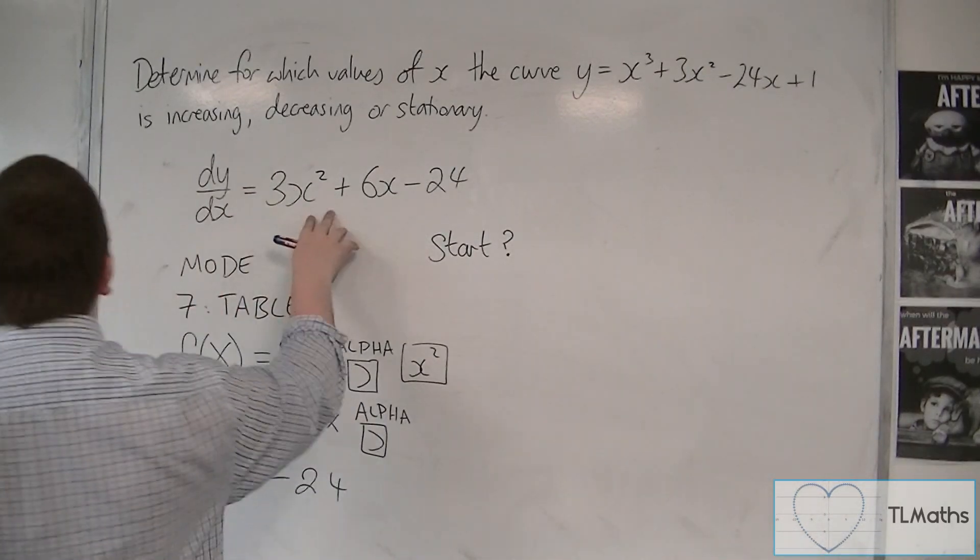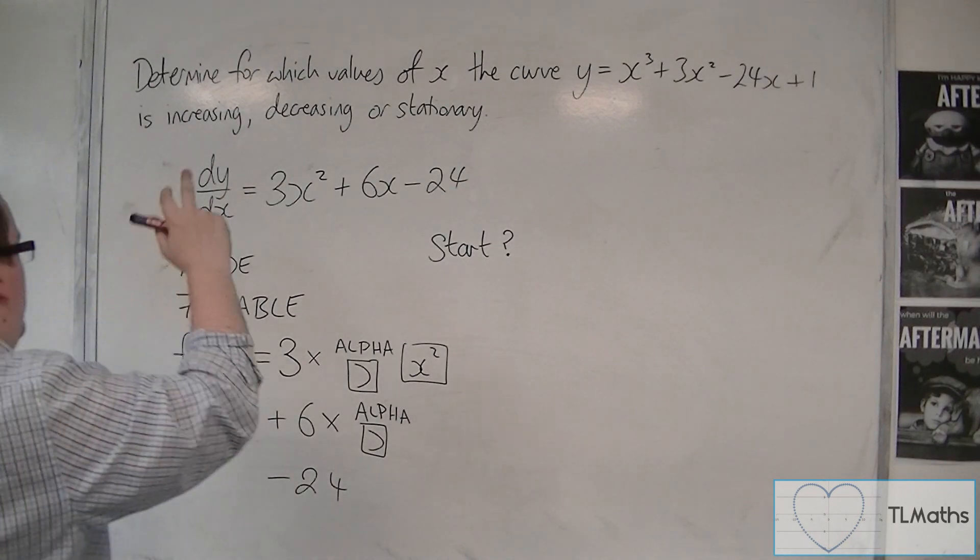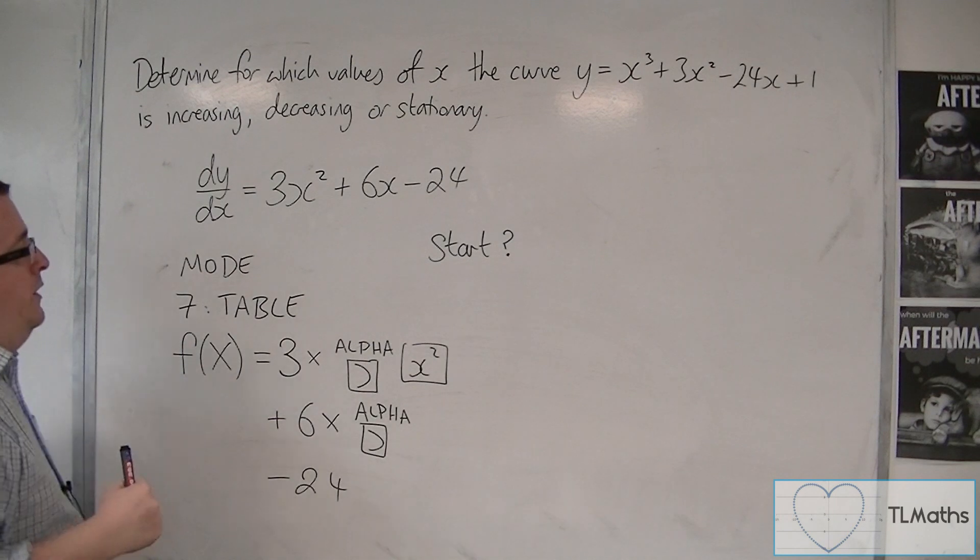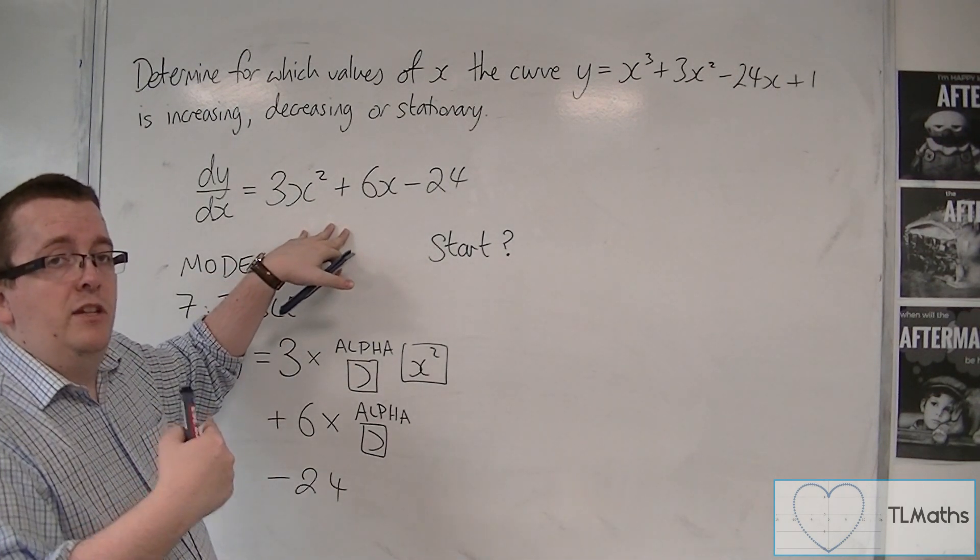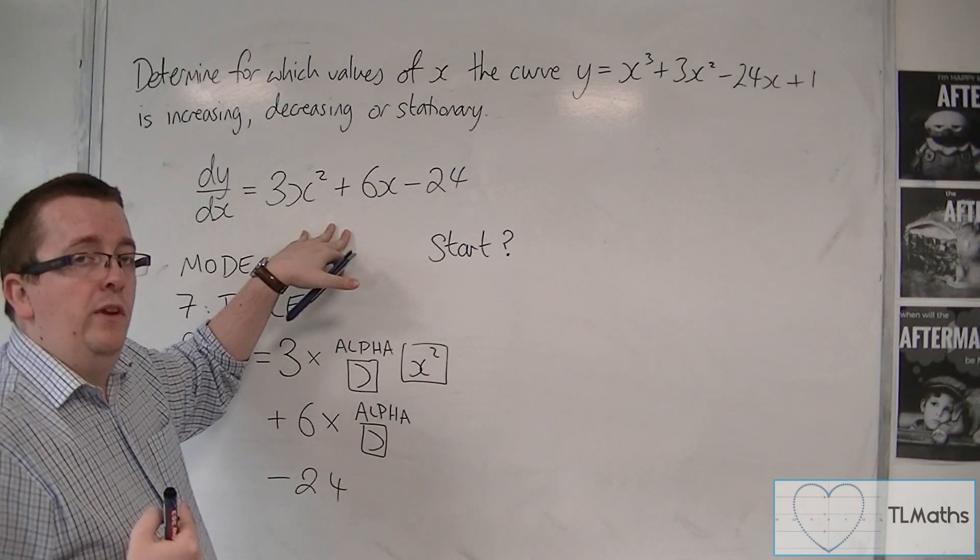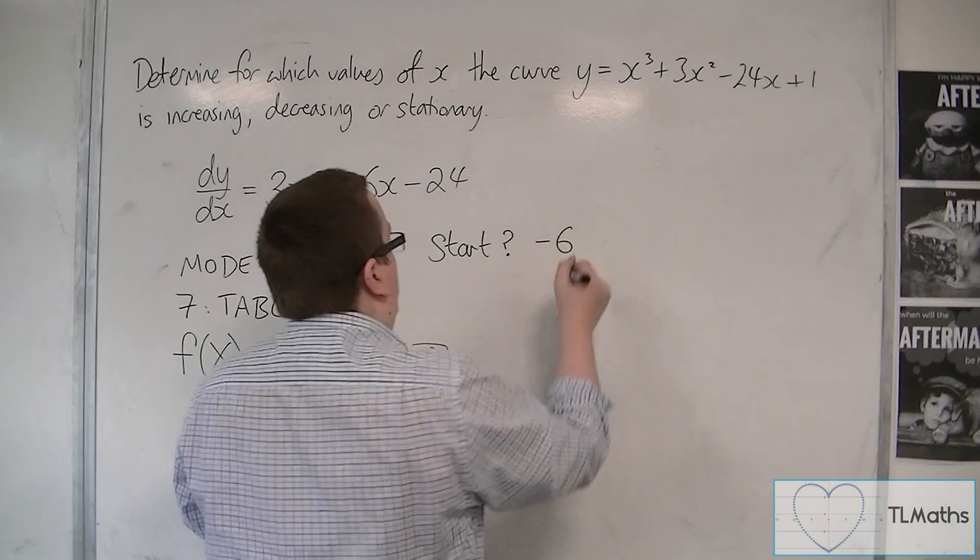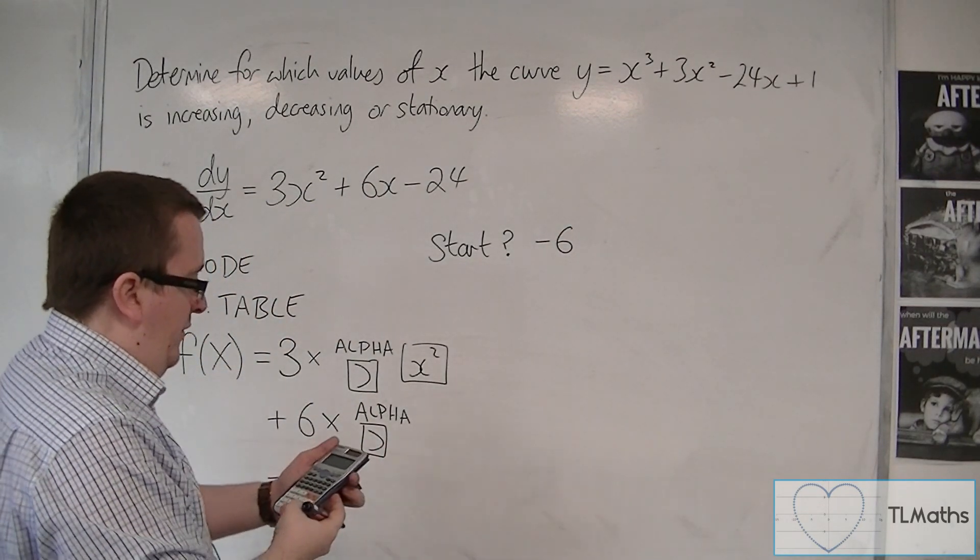Now when we worked through this problem in the previous video, we found that there was a stationary point at minus 4. So what I would do is look at a couple of points below that. So let's try minus 6. We're going to put minus 6. Use the minus sign and then number 6, and then press equals.